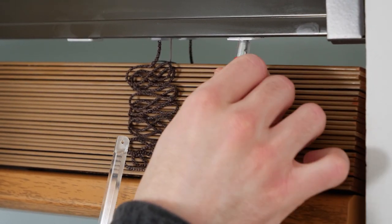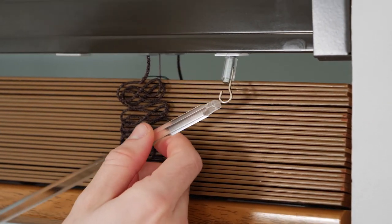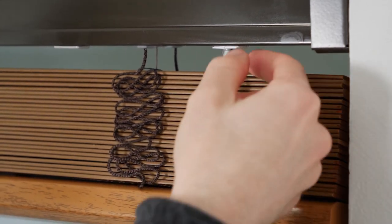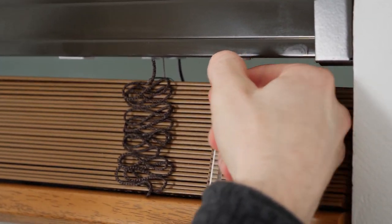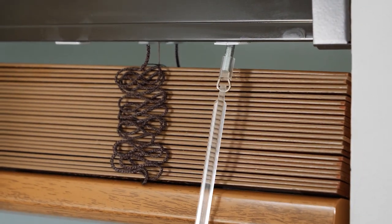Now it's time to attach the wand. To do so, hook the wand onto the exposed loop. Slide the hook sleeve over the connection so that the wand cannot slip off.